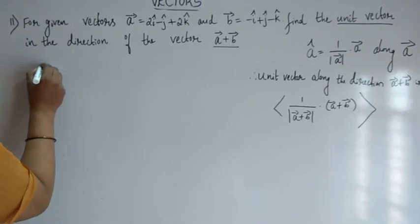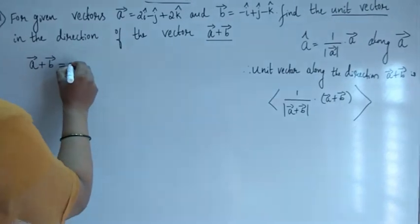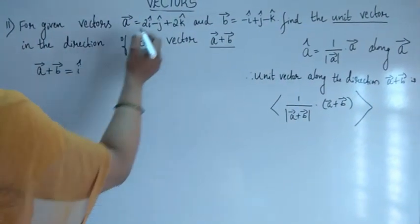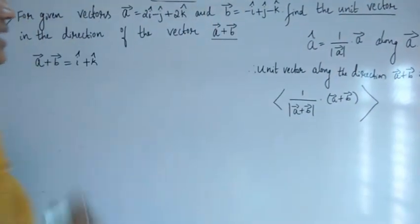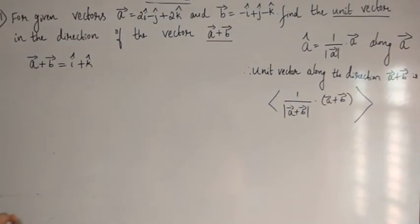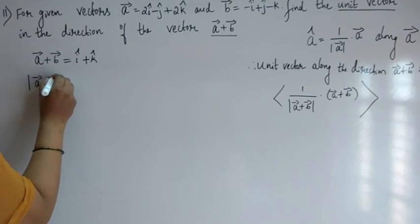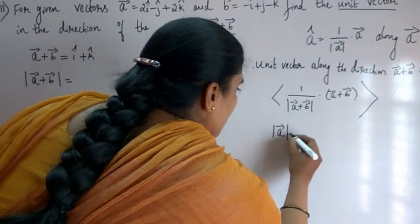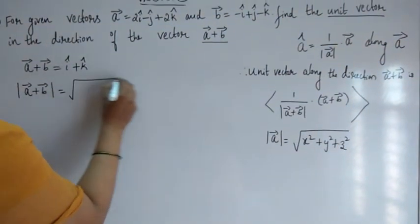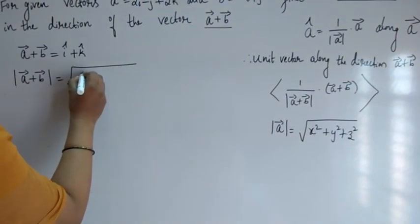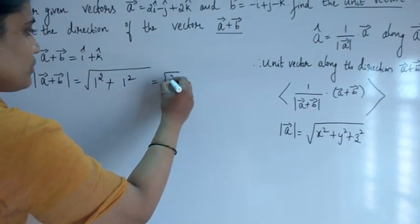First, let us find vector A plus vector B. Adding the two vectors: 2i-cap minus i-cap gives i-cap; the j-cap terms cancel giving 0 j-cap; and 2k-cap minus k-cap plus k-cap simplifies. So vector A plus vector B equals i-cap plus k-cap. Then find the magnitude: magnitude of (A plus B) equals square root of x-square plus y-square plus z-square, that is root of 1-square plus 0-square plus 1-square, which equals root 2.